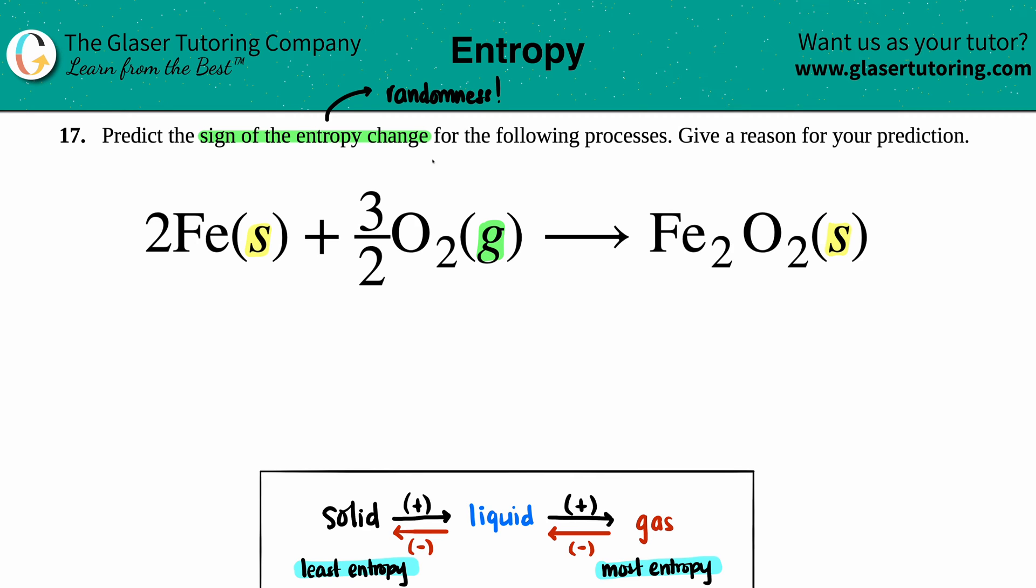Remember, entropy is just talking about randomness of molecules or chaos that's going on in the system—disorder. And when we're doing the math with entropy, entropy is an S variable. Now they want us to find the change, so we're trying to find the delta S. That triangle just means the change, what's going from where we started to where we ended.